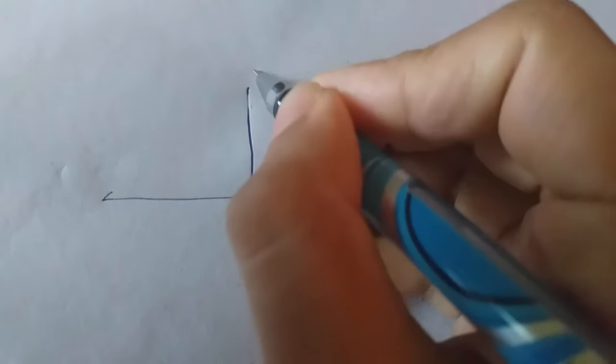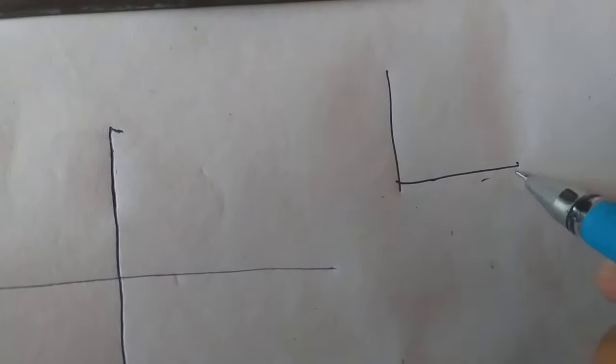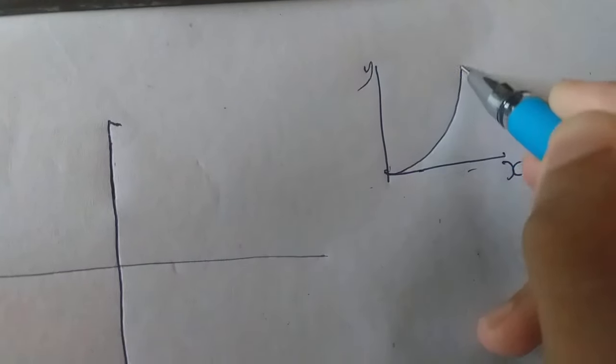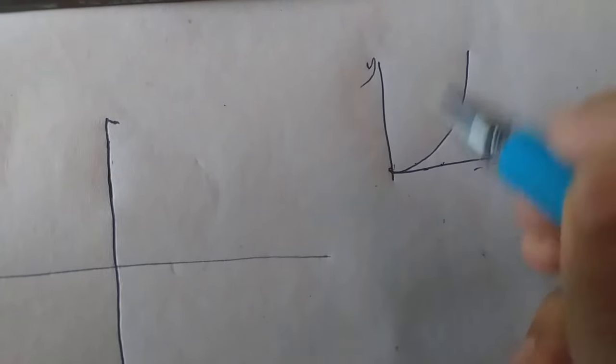What is the divergence and what do we have to do? Now we have a graph. We have an x-axis and a y-axis. This is the function.